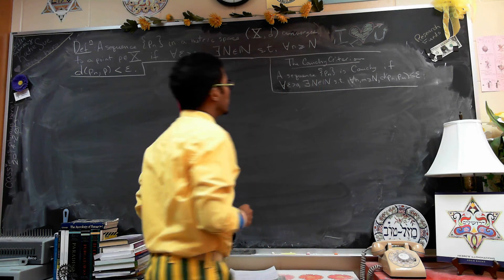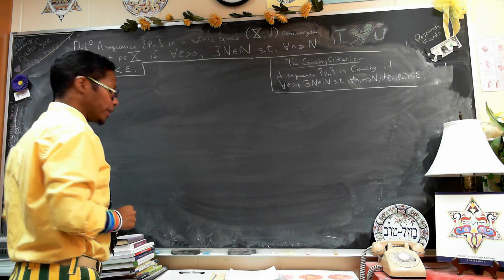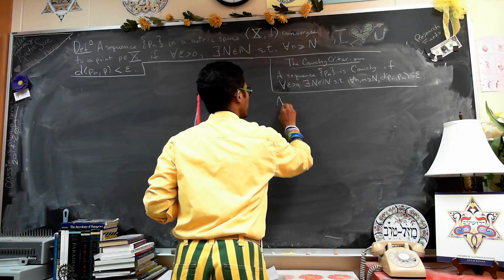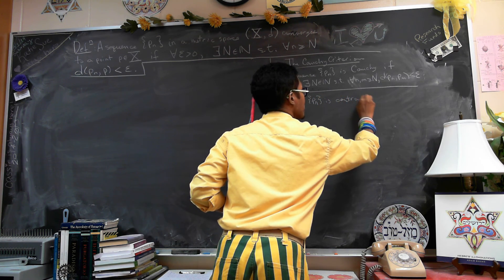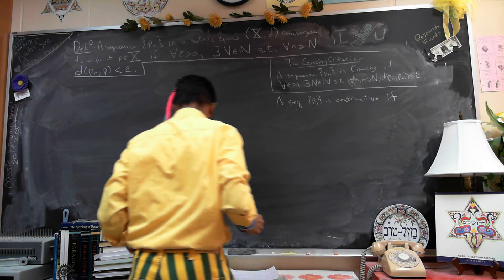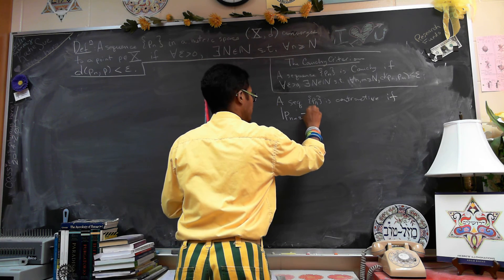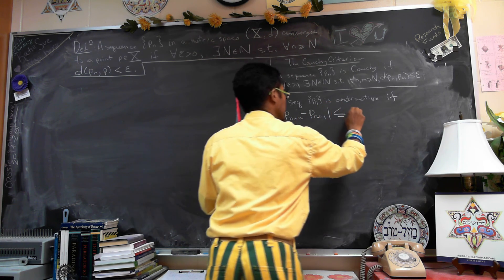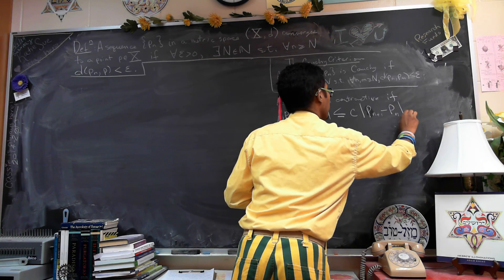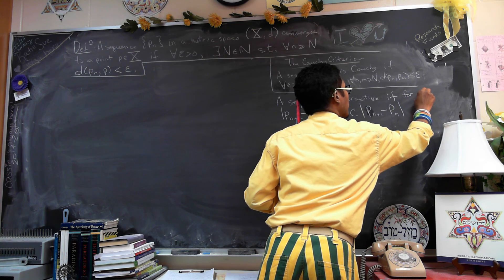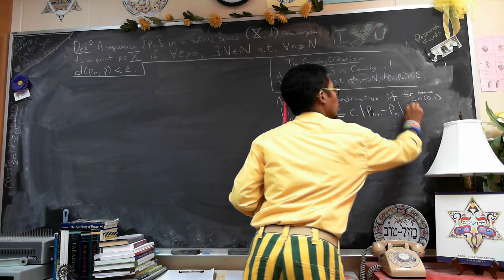Is it always easy to find if a sequence is Cauchy? No, but in some circumstances it is, and that's when we have what I'm going to call a contractive sequence. A sequence p_n is contractive if p_{n+2} minus p_{n+1} is less than or equal to c times p_{n+1} minus p_n, for some c in the interval (0, 1), and this condition holds for all n.